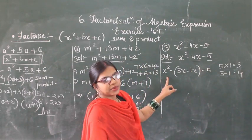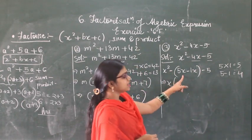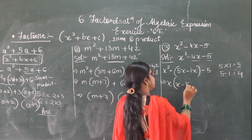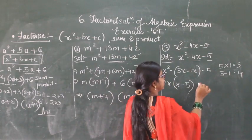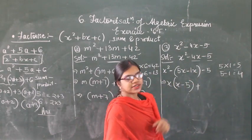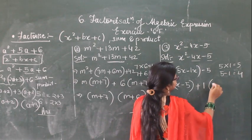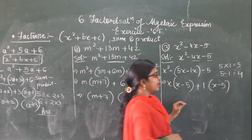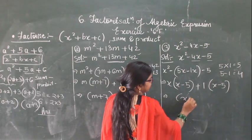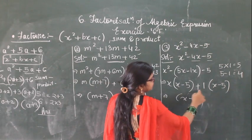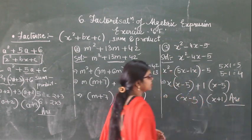Now take out the common. From x square minus 5x, we get x common and what is left is x minus 5. From minus 1x minus 5, the minus minus becomes plus, so taking 1 common leaves x minus 5. So x minus 5 is common in both, and on the left we have x plus 1. So the factors are x minus 5 and x plus 1. In this way you have to solve all portions of this exercise.